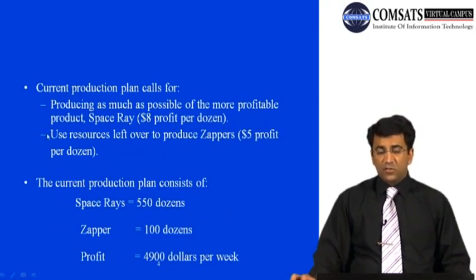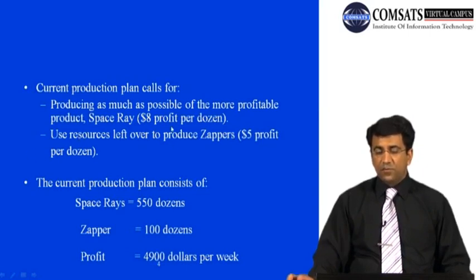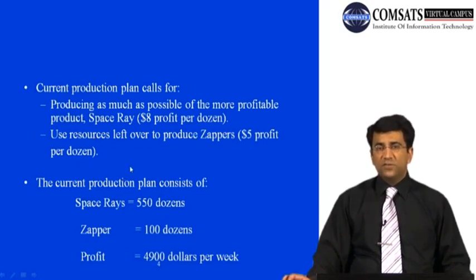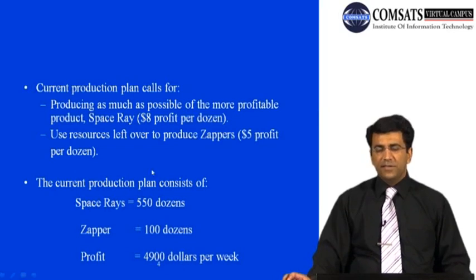The current production plan calls for producing as much as possible of the more profitable product, Space Ray, at $8 profit per dozen, and using leftover resources to produce Zappers at $5 profit per dozen. Our objective function is z equals 8x1 plus 5x2, which we want to maximize.